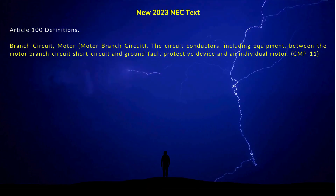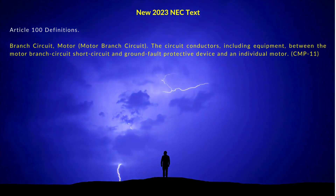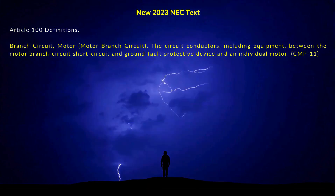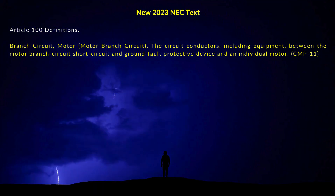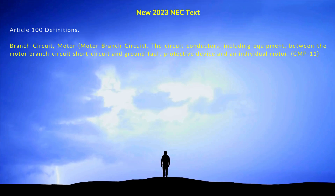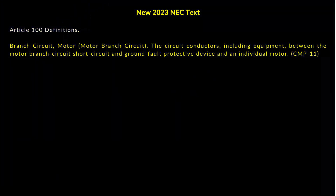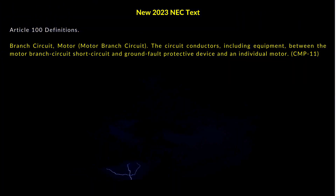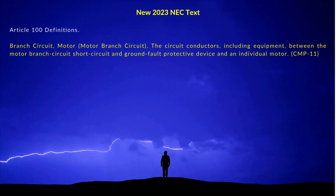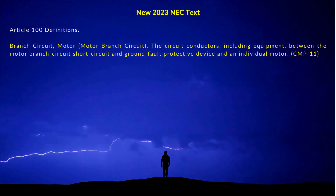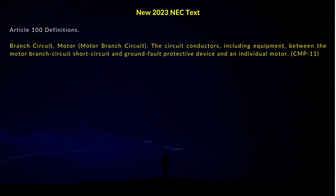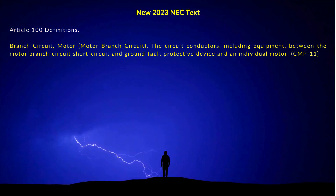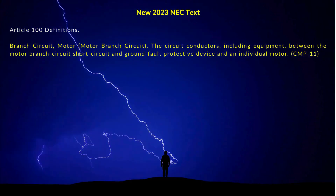The new 2023 NEC text for branch circuit motor states that the circuit conductors, including equipment, between the motor branch circuit short circuit and ground fault protective device and an individual motor.